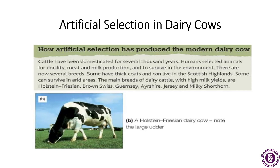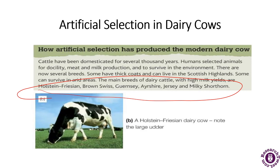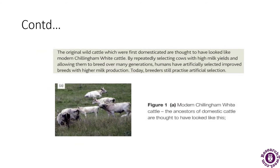The main breeds of dairy cattle with high milk yields are shown here. The original wild cattle, first domesticated, are thought to have looked like the modern white cattle shown. By repeatedly selecting cows with higher milk yields and allowing them to breed over many generations, humans have artificially selected improved breeds with higher milk production. Today, breeders still practice this artificial selection — it is a very old process.